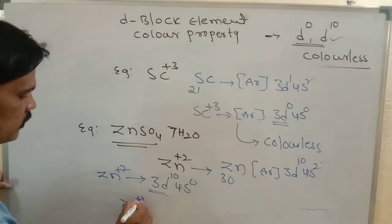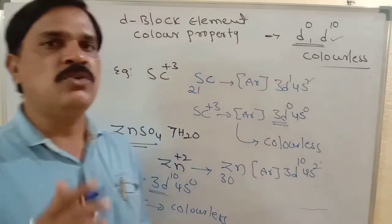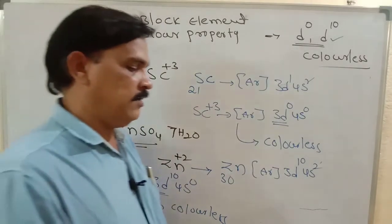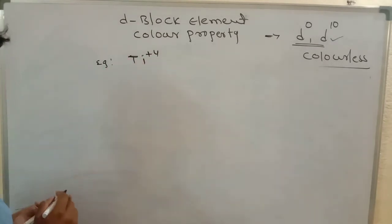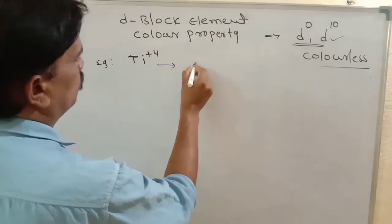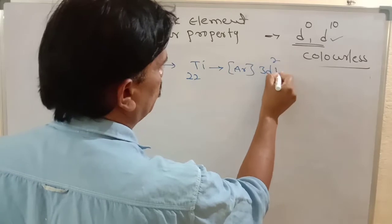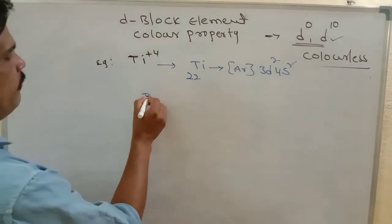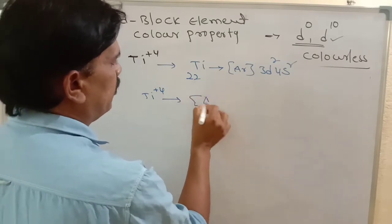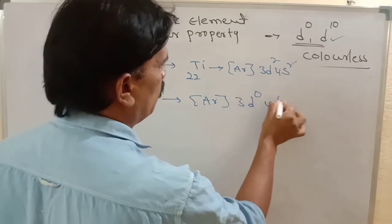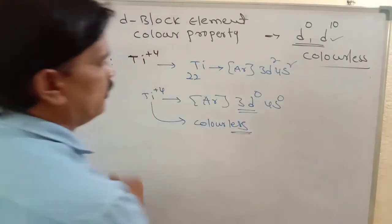Since Zn²⁺ has D-10 electronic configuration, it is colorless. This is the trick: anywhere you observe D-10 configuration, that metal ion is colorless. Similarly, Titanium has atomic number 22, with electronic configuration [Ar] 3D² 4S². For Ti⁴⁺, removing two electrons from 4S and two from 3D gives 3D⁰ 4S⁰ — a D-0 configuration. So Ti⁴⁺ is also a colorless compound.